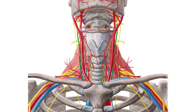Under the sternocleidomastoid region runs a neurovascular bundle containing the common carotid artery, the internal jugular vein, the vagus nerve, highlighted here in green, and the cervical ansa.